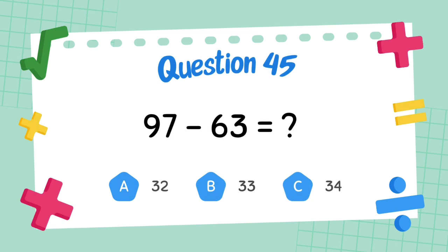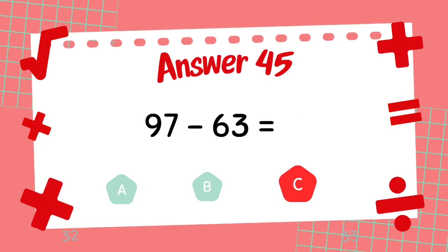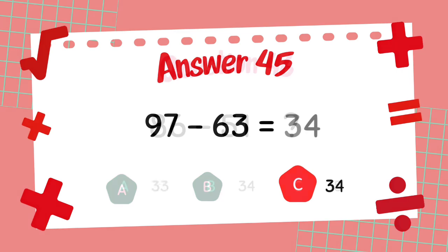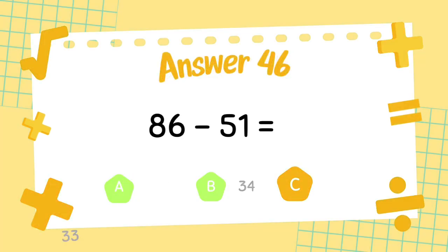What is 97 minus 63? The answer is 34. What is 86 minus 51? The answer is 32.